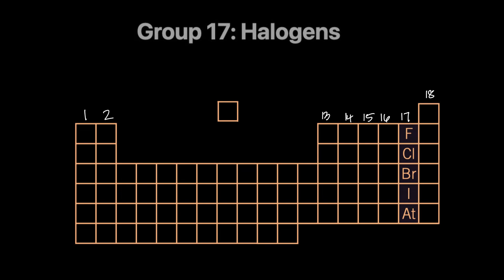They all have very interesting properties in terms of their physical state, their color, and their reactivity. Both the elements of this group — called halogens — and the anions we study, called halides, are important. Halogens are reactive non-metals: they are very reactive, and as non-metals they don't conduct current in the solid or liquid state, which means they have a simple molecular structure.